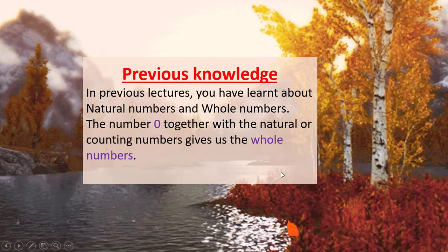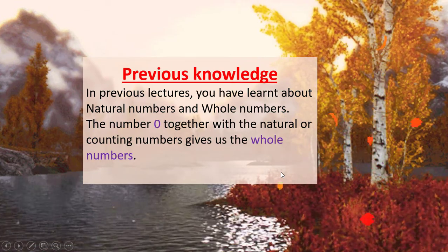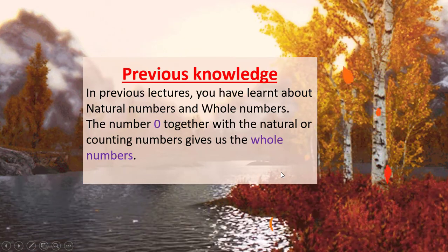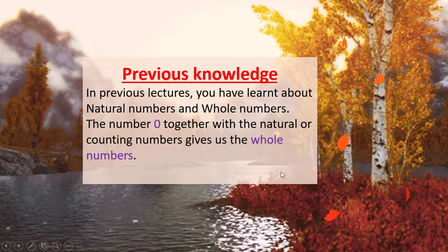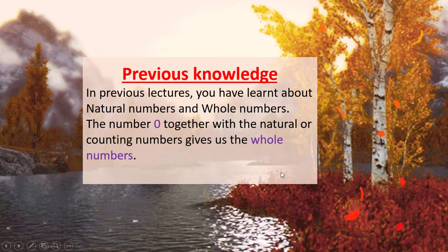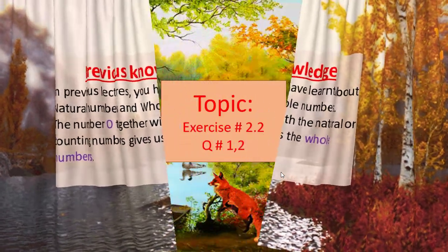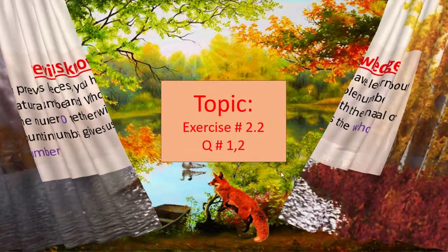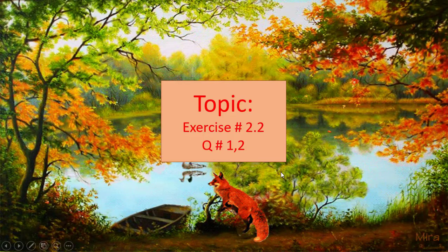Firstly, we recall the previous knowledge. In previous lectures, you have learnt about natural numbers and whole numbers. The number 0 together with the natural or counting numbers gives us the whole numbers. So, here is the topic: Exercise No. 2.2, Question No. 1 and 2.